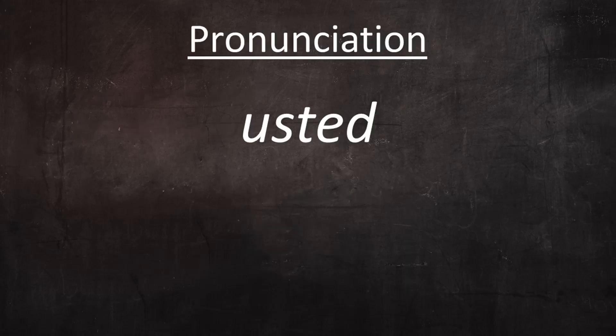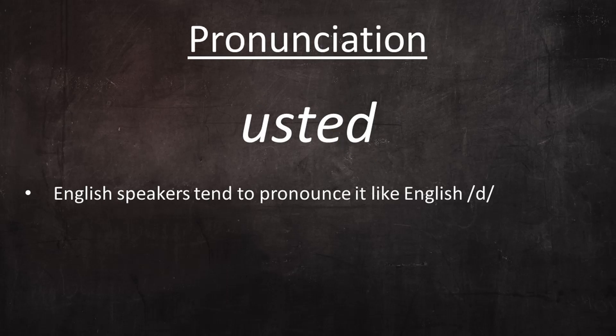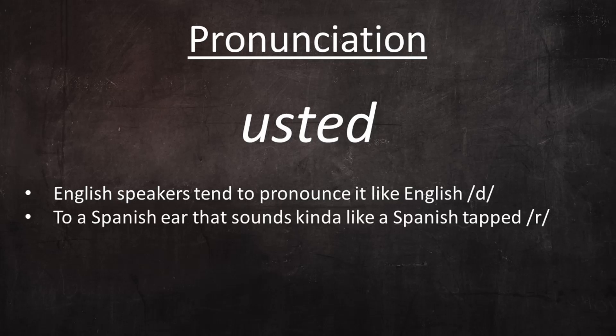One thing we should make very clear before we go any further is how this pronoun is pronounced. The big issue for native English speakers is the d. They have a tendency to pronounce it as an English-style alveolar d, something like 'usted.' This is inaccurate for all dialects of Spanish and sounds foreign to a Spanish ear. Because the closest Spanish sound to the English alveolar d is the Spanish tapped r, to a Spanish ear the pronunciation 'usted' sounds as if it had an r at the end rather than a d, something like 'usted.'